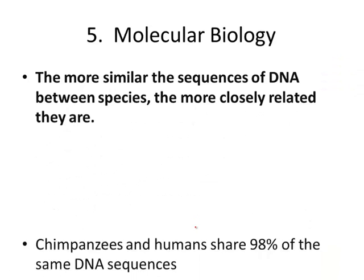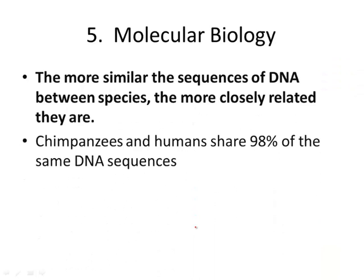The last type of evidence is molecular biology — the idea that the more similar the DNA, the more closely related they are. For example, chimpanzees and humans share 98% of the same exact DNA sequences, meaning we are closely related to chimpanzees. Bananas share only 50% of our DNA, so we're still related to bananas — related to everything — but not as closely as to chimpanzees.